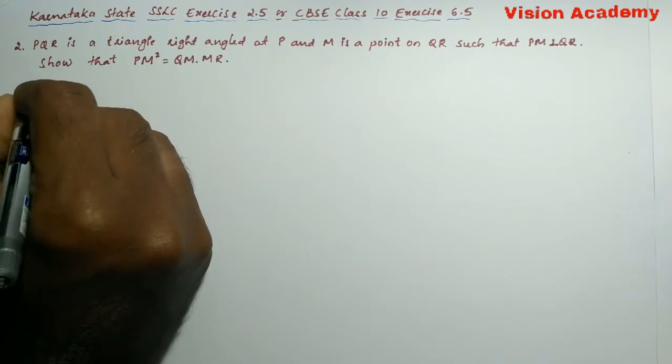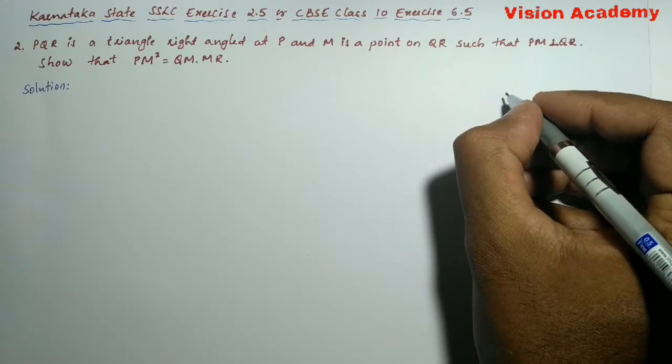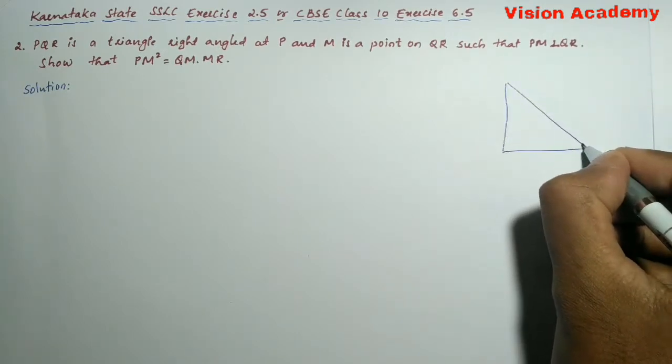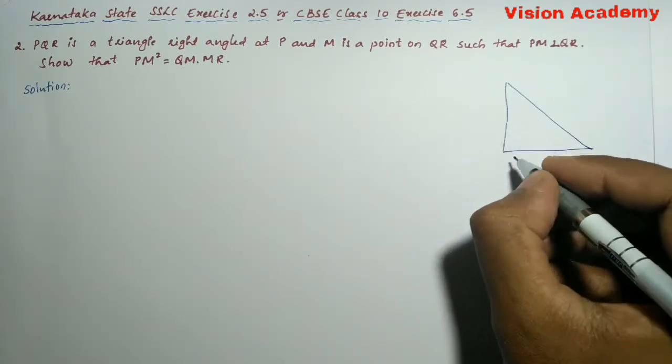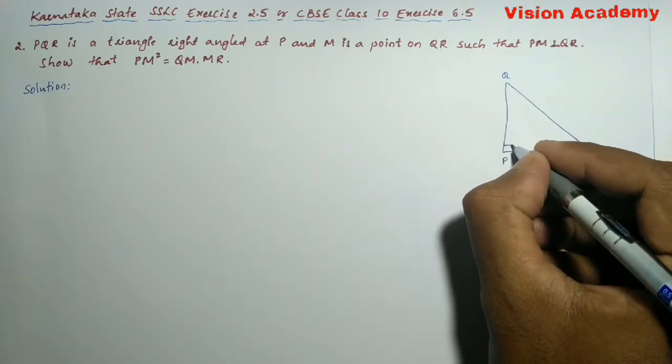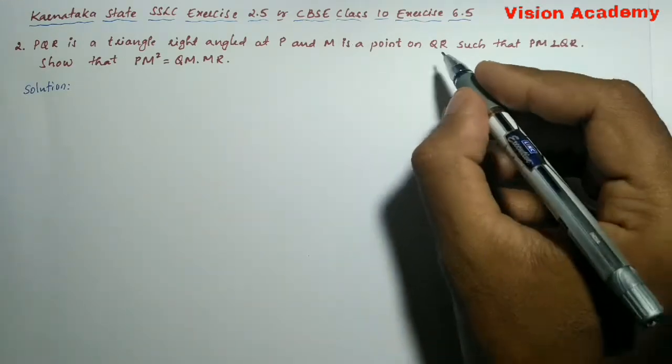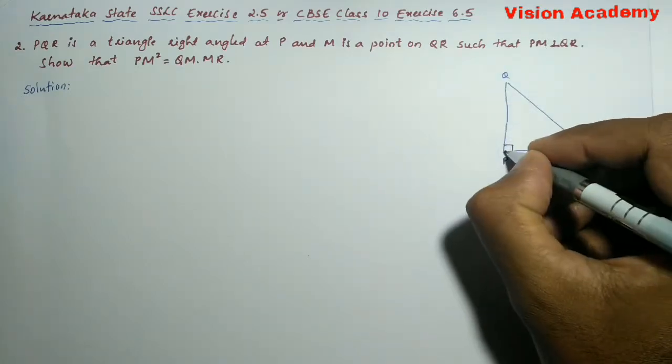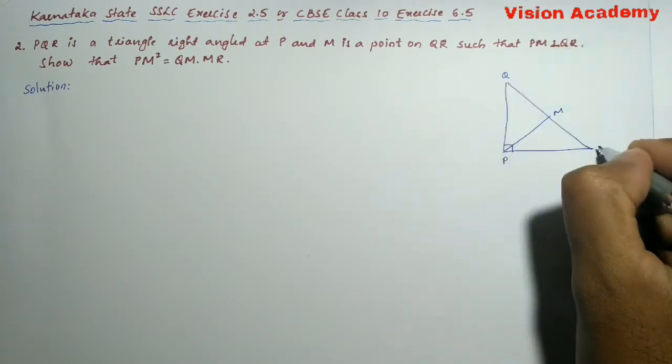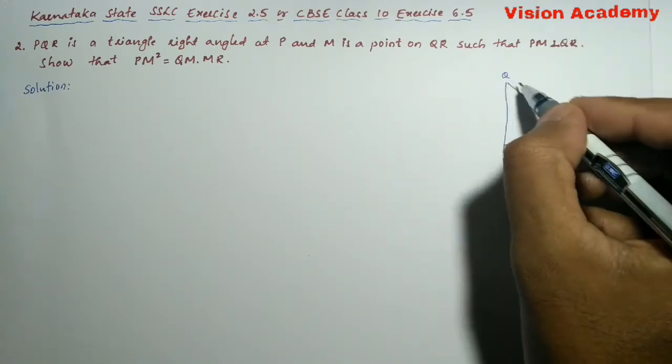Let us find the solution for the given problem. Here let us draw a right angled triangle PQR where P is right angled and M is a point on QR such that PM is perpendicular to QR.